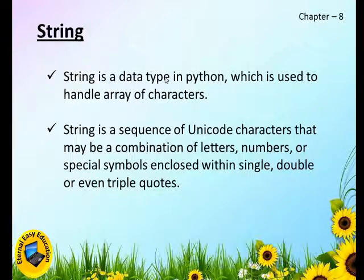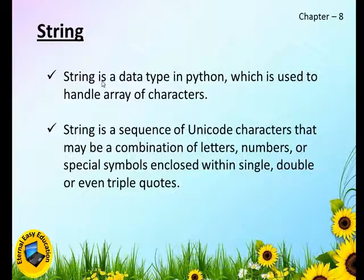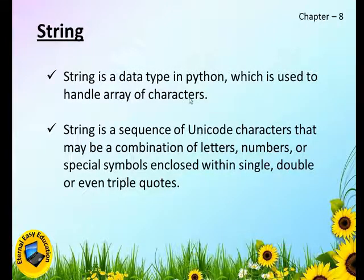As you know, in Python we are not declaring the data type as in C++. In C++ programming we have to declare it as int, float, or char, but here there is no need. The concept of string is the same in both C++ and Python — in both, a string is a collection of characters. Here, a character means it can be a letter, a number, or a special symbol, so it can be alphanumeric and also contain symbols.